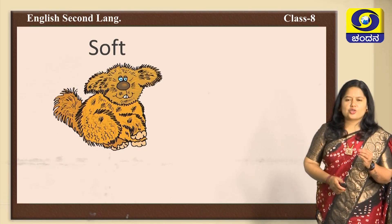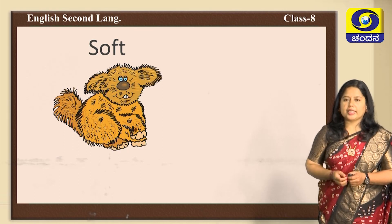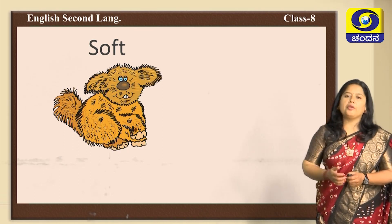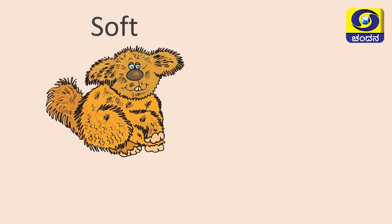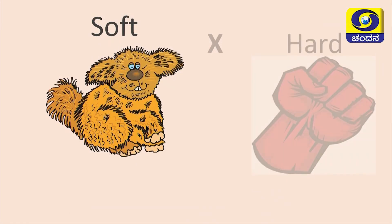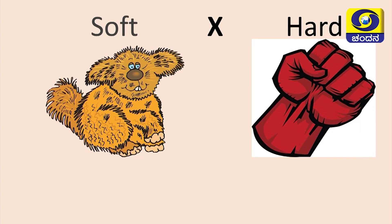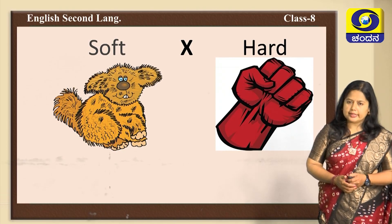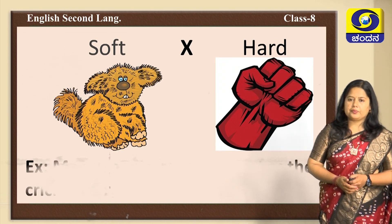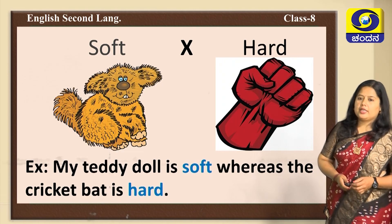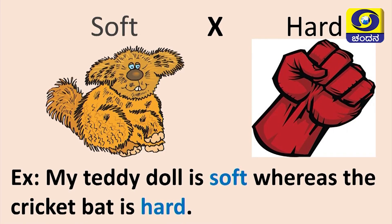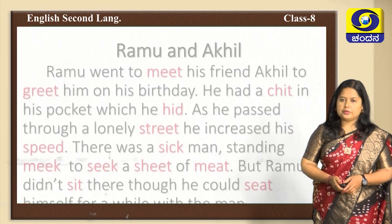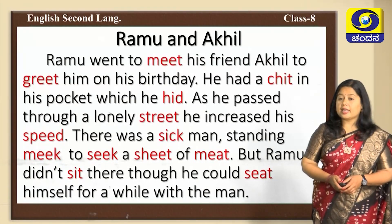The next word is 'soft' — something delicate. What could be the opposite, or antonym of soft? You are right — that is 'hard.' Example sentence: 'My teddy doll is soft whereas a cricket bat is hard.'